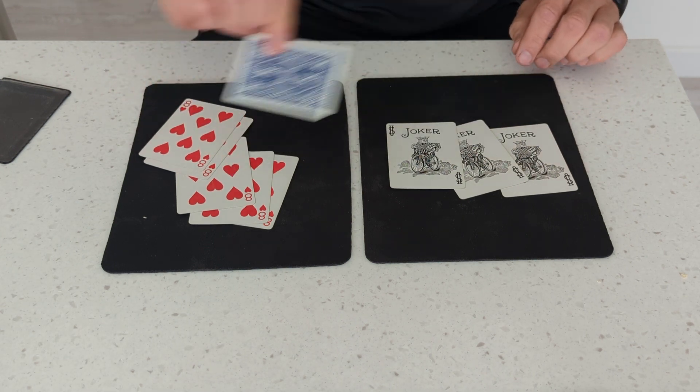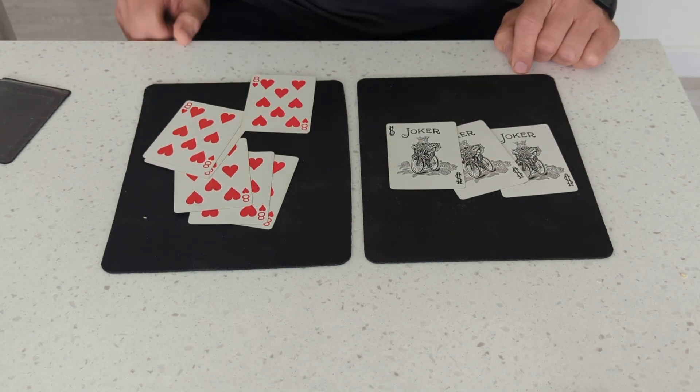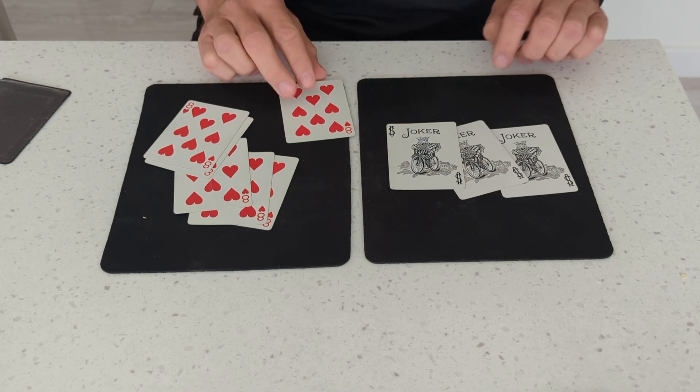But let's take one of the jokers from there over the face up eight. And you get a face up eight among the face up eights. And that's pretty cool.